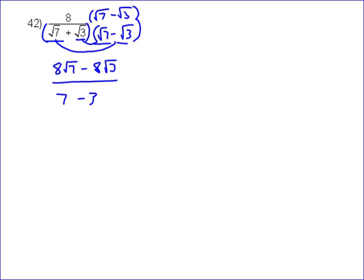The √21s would cancel themselves out. So this is going to equal 8√7 minus 8√3 all over 4.